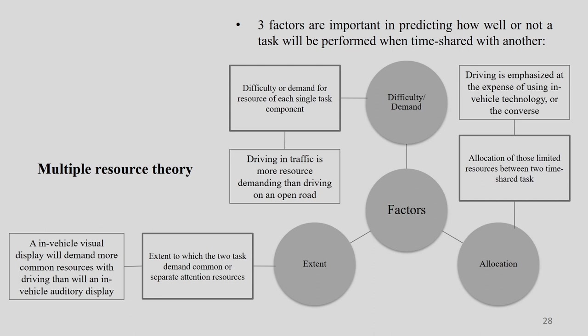Let us understand more in detail about the factors. Multiple resource theory says three different factors are important in predicting how well — or not — a task performs when time-shared with another. The first factor is difficulty or demand, the second is extent, and the third is allocation. These three factors are important in predicting how well a task will be performed when time-shared.